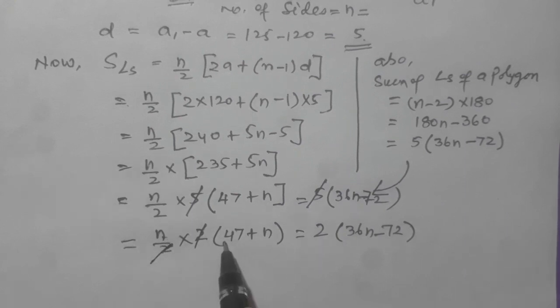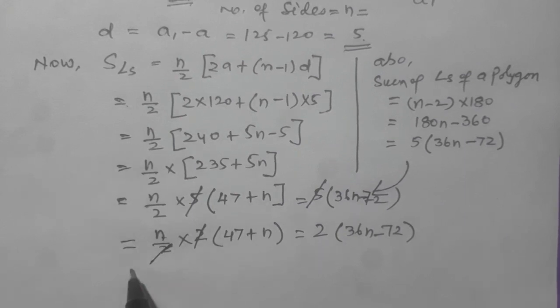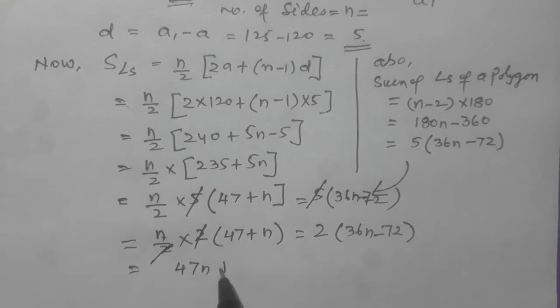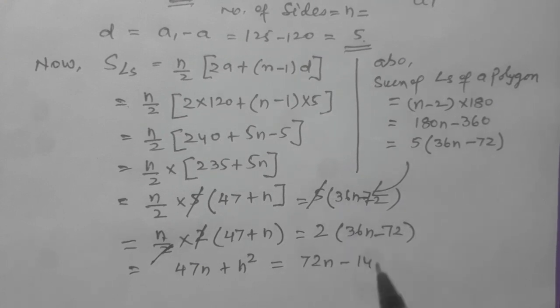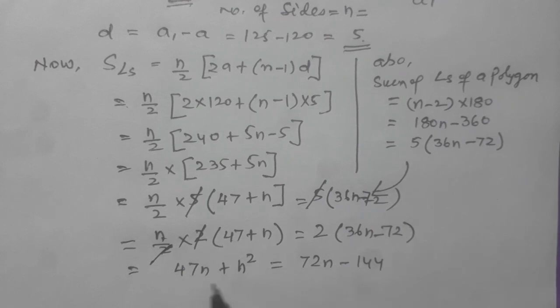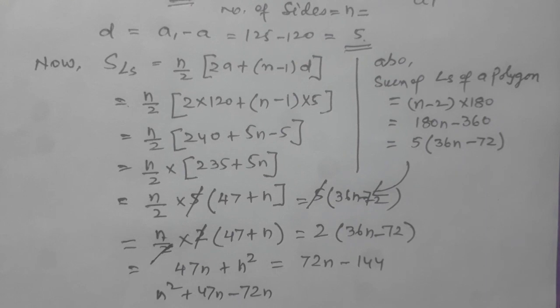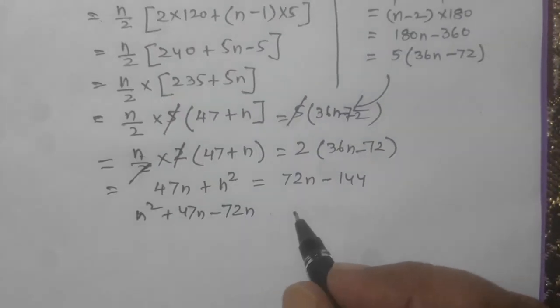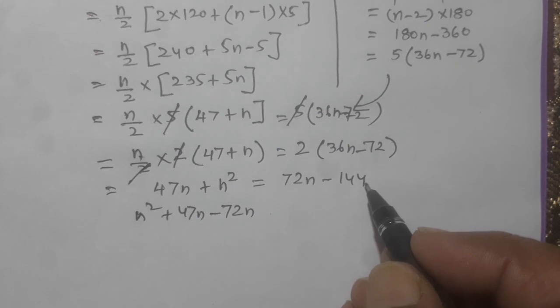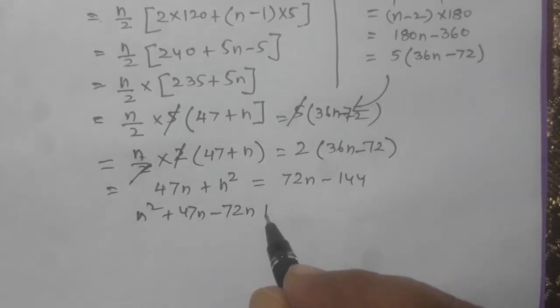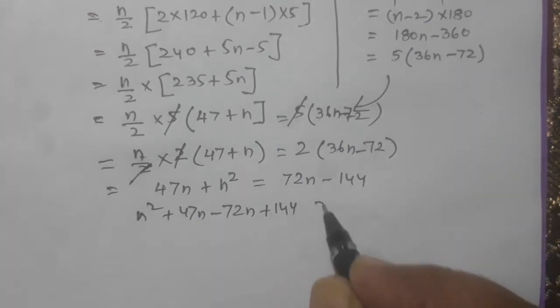So N multiplied by 47 will be 47N plus N into N, N squared equals 72N minus 144. Now we shall bring N squared here, plus 47N here, this 72N will be minus 72N, and this 144 bring this side so it will be plus 144 equals 0.